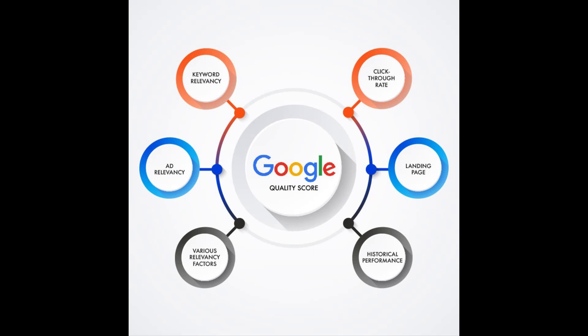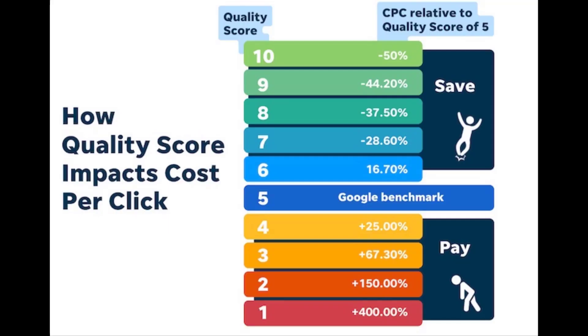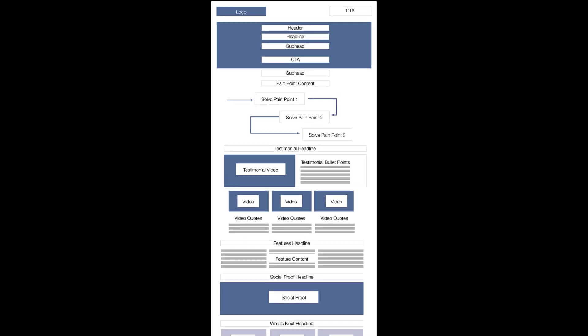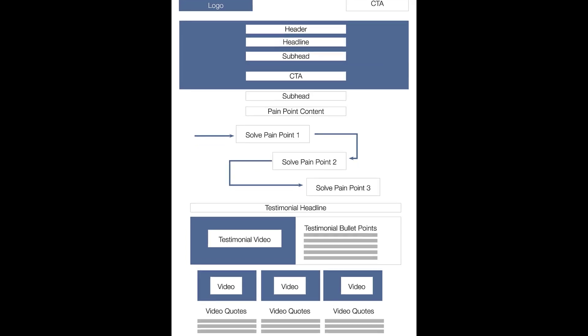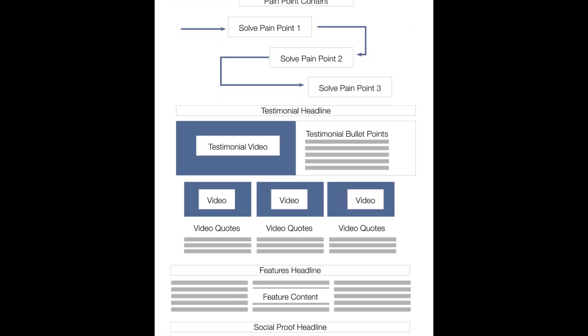Advertising platforms use a similar SEO algorithm to determine your quality score — an arbitrary score given to each page based on how it relates to the keyword. This helps advertising platforms keep irrelevant information off certain searches, but it also allows them to artificially inflate the price of a click. The code structure for this type of page is similar to the SEO structure with a few major differences.